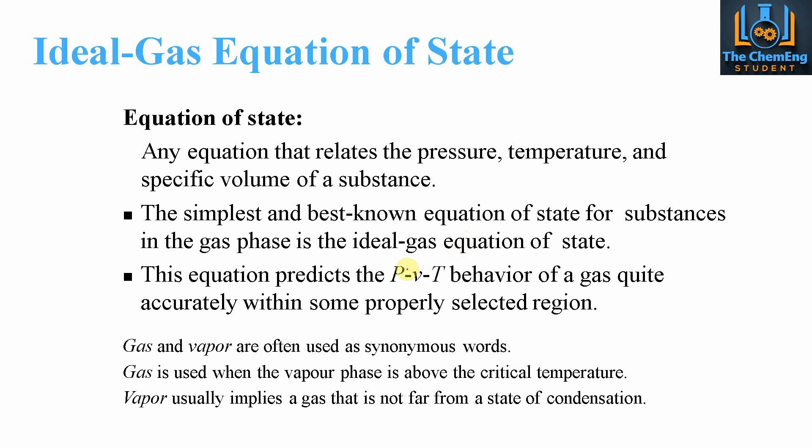And the equation predicts the PVT behavior, that is the pressure, the specific volume, and the temperature of a gas, which is fairly accurate. Now, gas and vapor are often used as synonymous words, whereas the gas or vapor phase is above the critical temperature, and vapor implies a gas that is not far from its state of condensation. That's just a couple of points to note as we go through this, so that if we refer to gas and we refer to vapor, we can distinguish the two.